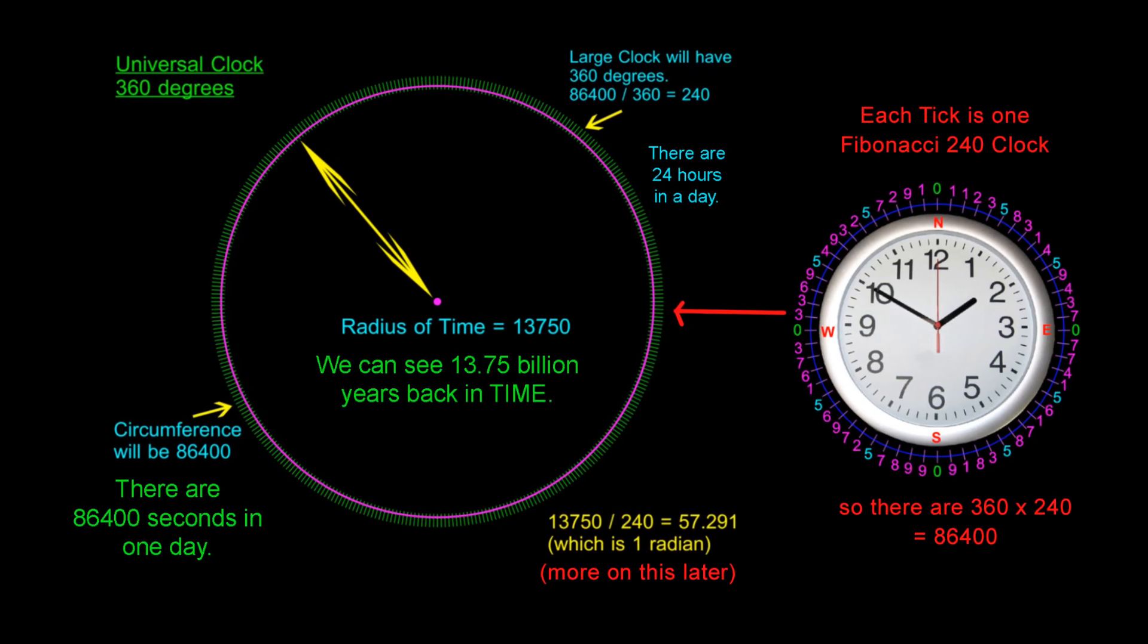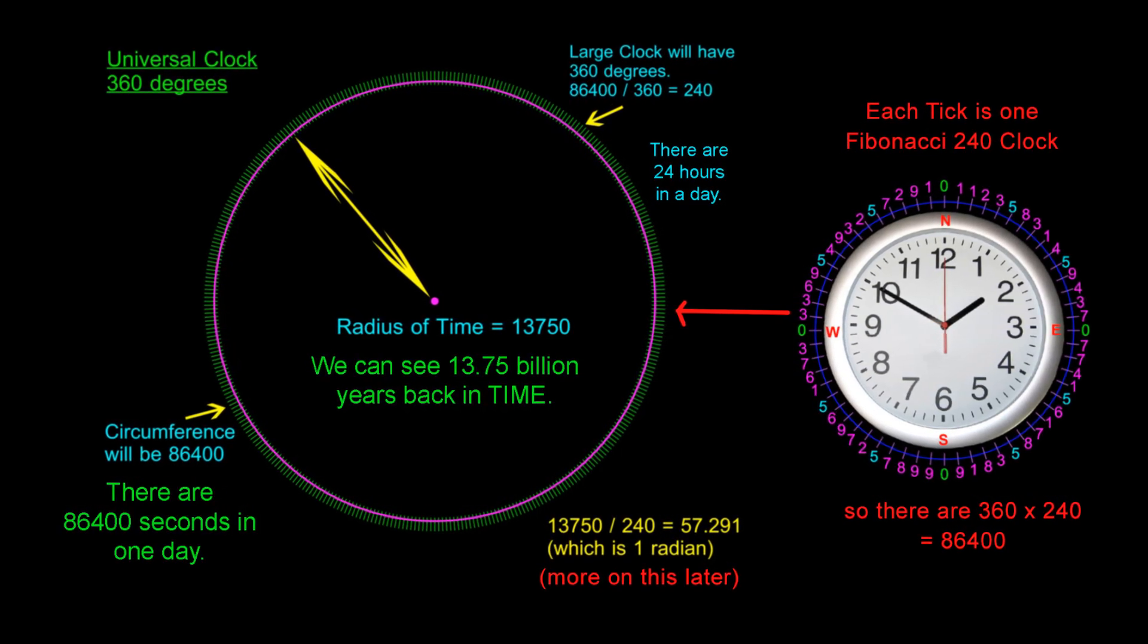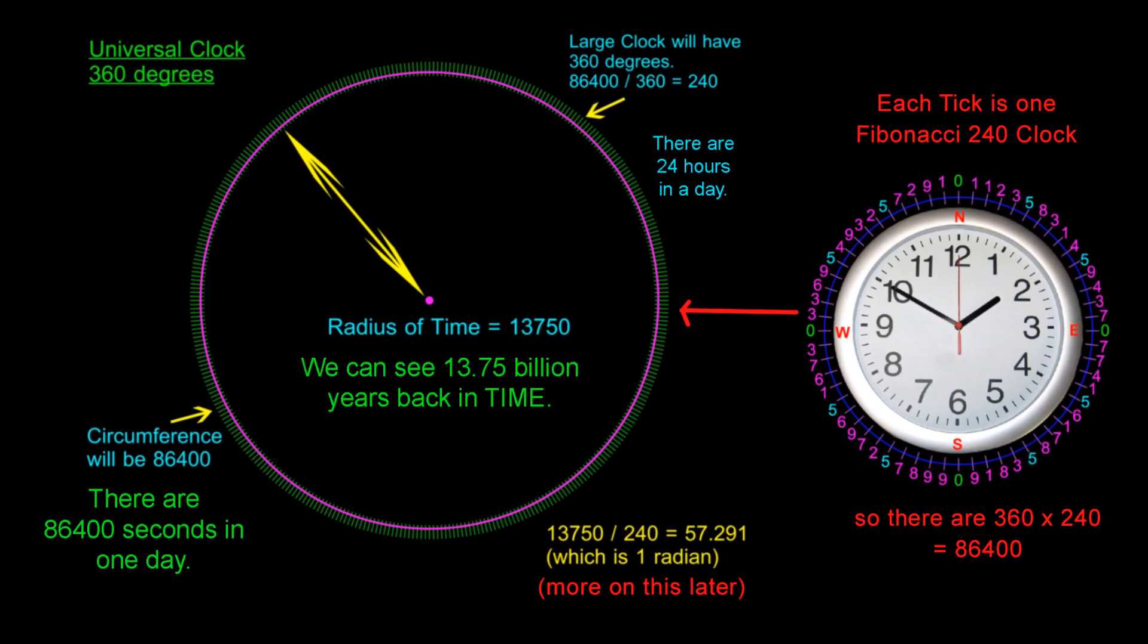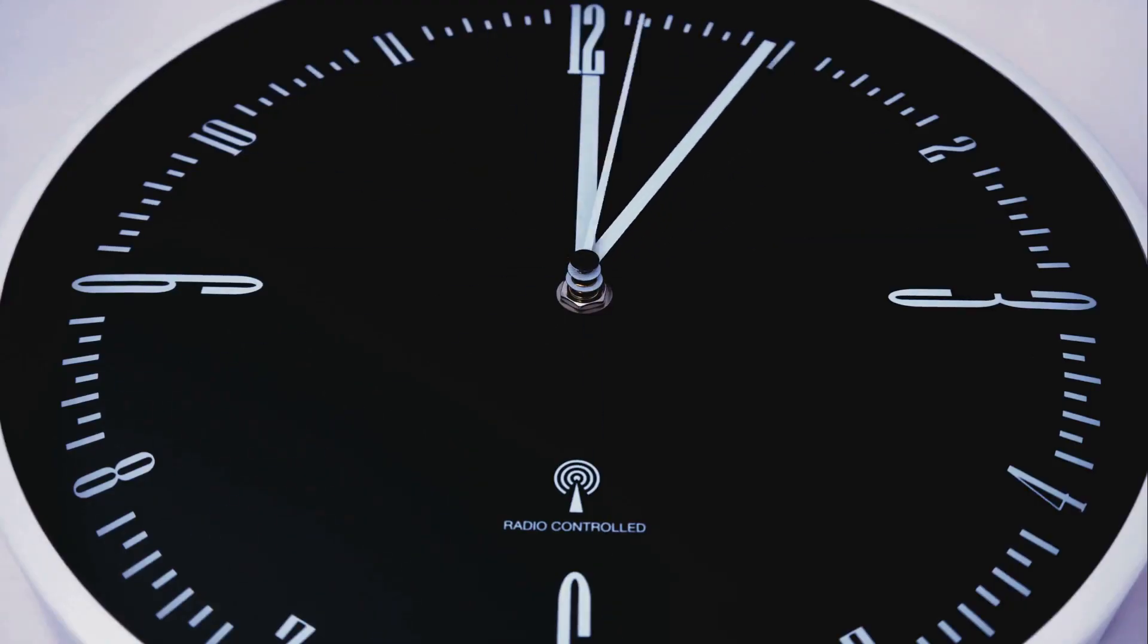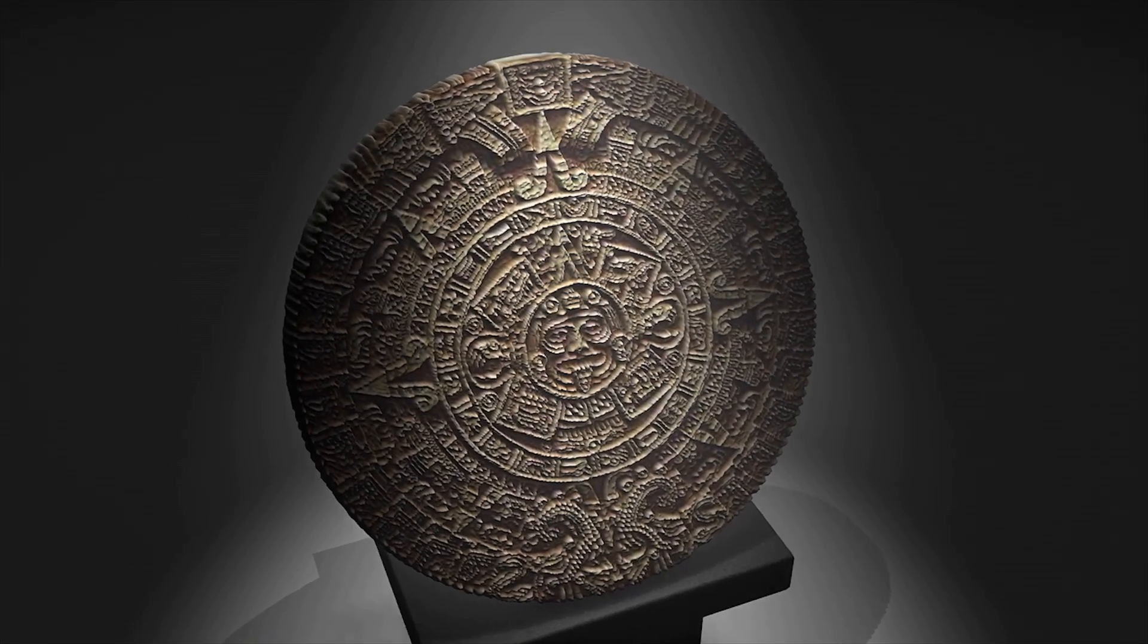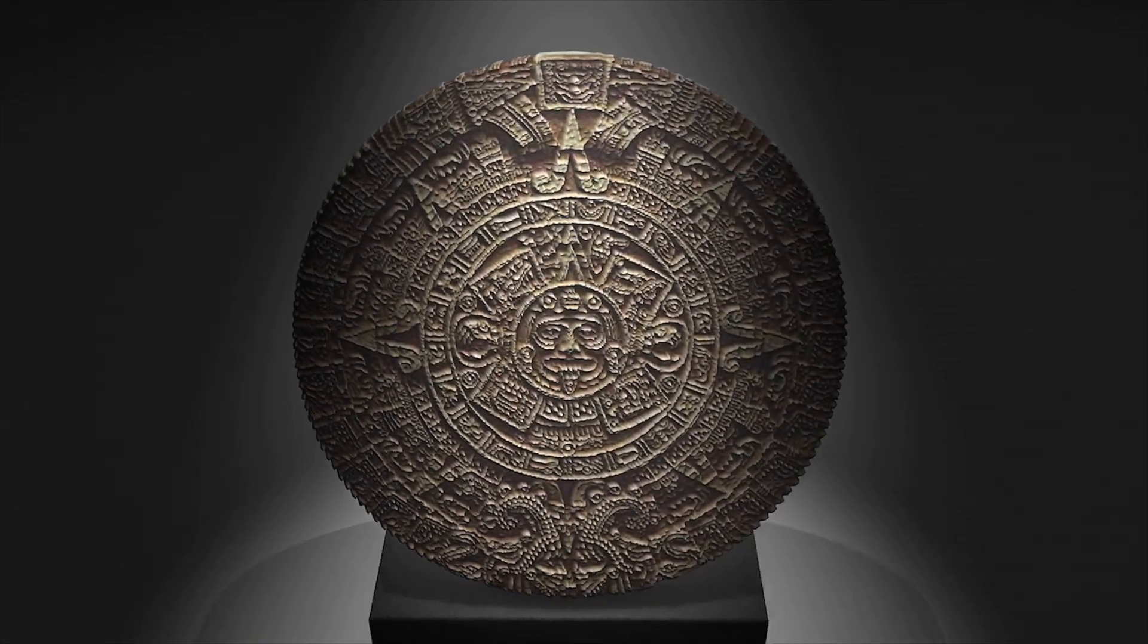When I do this, I get a circle with a circumference value of 360 times 240 which equals 86,400 units. Remember, we have 86,400 seconds in one day. That's 60 minutes times 60 seconds times 24 hours equals 86,400. This is very similar to the Mayan concept of smaller cycles of time within larger cycles of time.